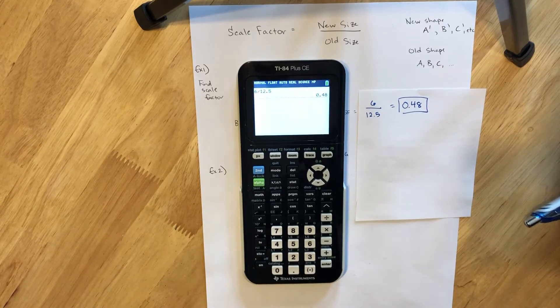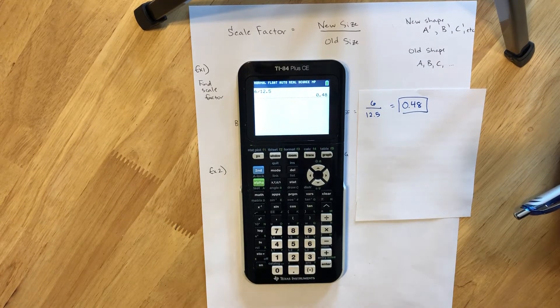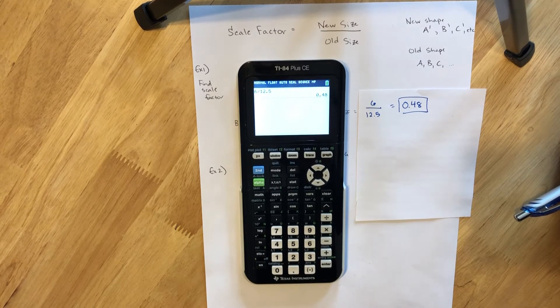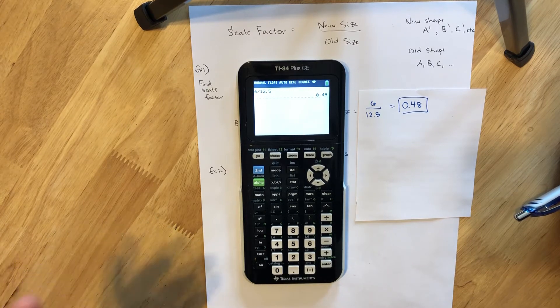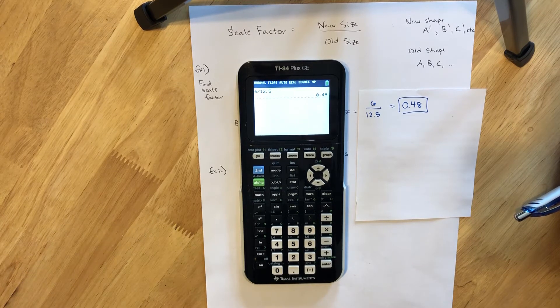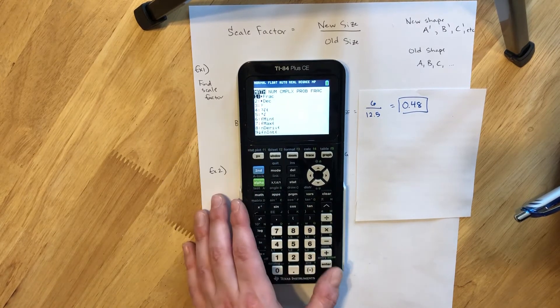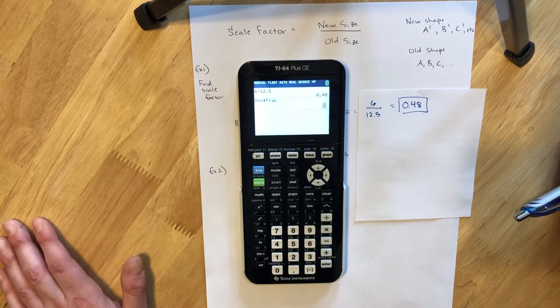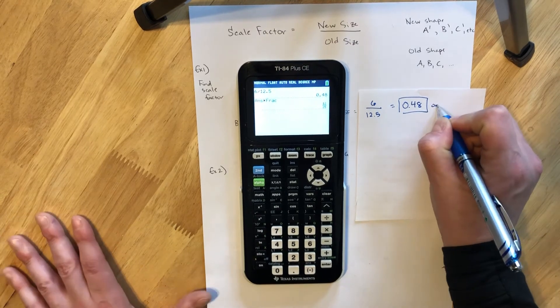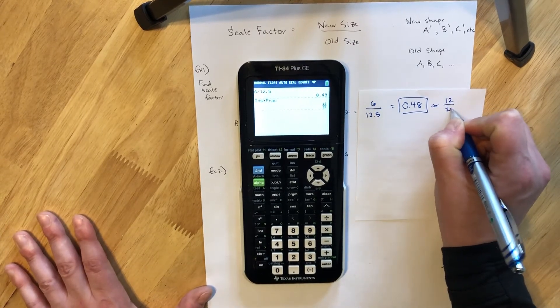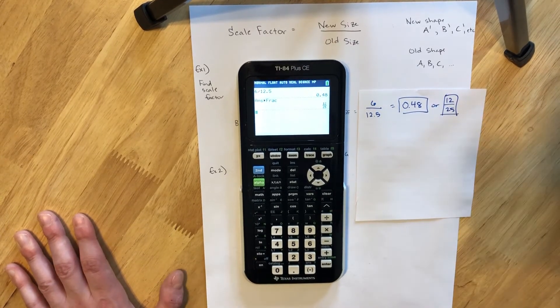And on Delta Math you can type in that decimal. It will accept it exactly as is. If you prefer to find the simplest fraction form of that by using the math menu and going to fraction, you could also write it as 12/25 and Delta Math will also accept that as a correct answer.